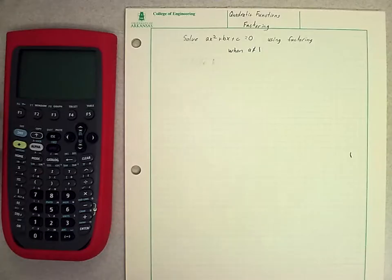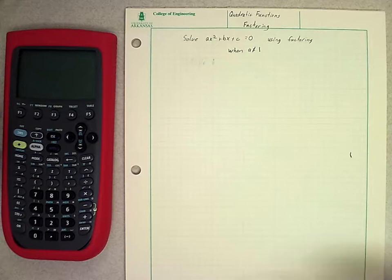We continue our discussion about quadratic functions. In particular, we're worried about how can we factor an equation ax² + bx + c = 0. We've already looked at the case when a is equal to 1, so now we want to look at the cases where our lead coefficient, or a, is not equal to 1.